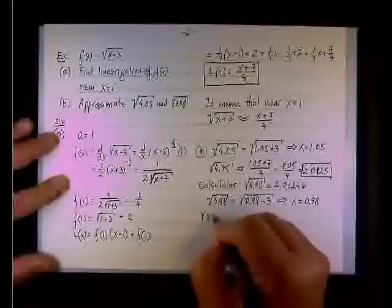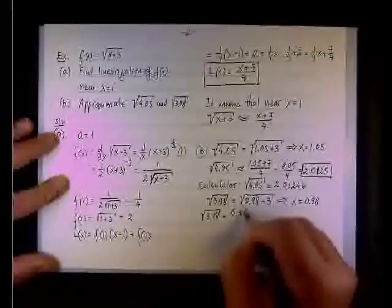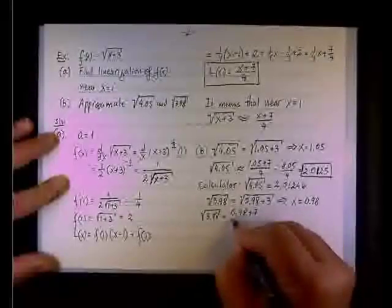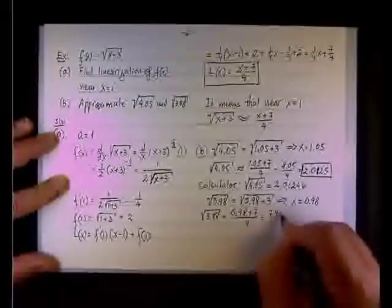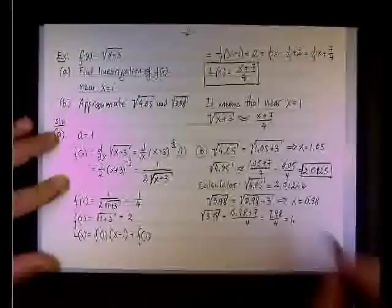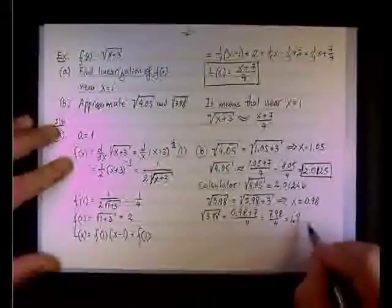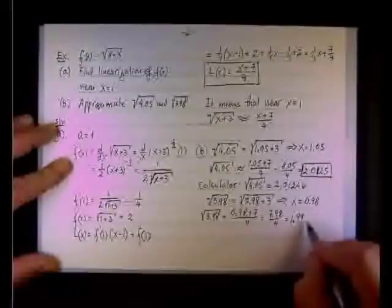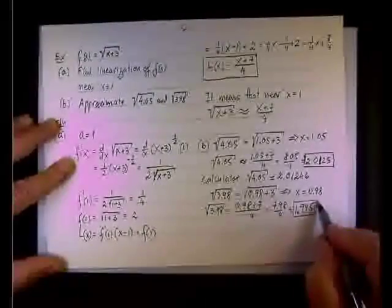So it will be (0.98 plus 7) over 4, or 7.98 over 4. And this would be 1, and 39 by 4 is 9, the remainder of 3, 38 by 4 is 9, the remainder of 2, so it would be 1.995.